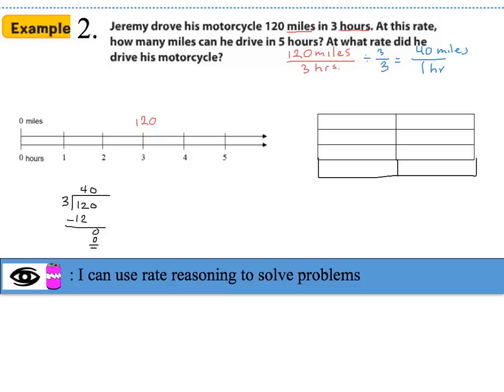Using that information, I'll fill out the double number line with 40 miles per one hour as the first entry. The question asks how many miles he can drive in five hours. If I take the unit rate and multiply it by five, top and bottom, I get 200 miles per five hours. That is the answer to this question.